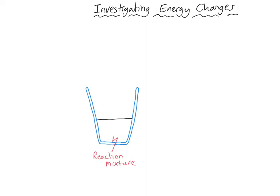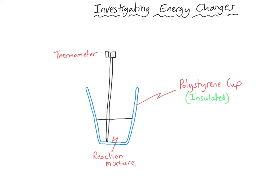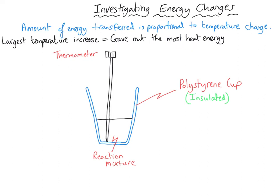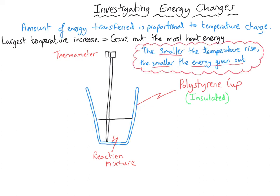We can investigate energy changes during a chemical reaction by carrying out experiments in insulated beakers and measuring the temperature change that occurs. The amount of energy transferred during a reaction is proportional to the temperature change. So if you run an experiment four different times changing something each time, the reaction with the biggest temperature increase has given out the greatest amount of heat energy, and the smallest temperature increase indicates the least energy released — helping you reach your conclusion.